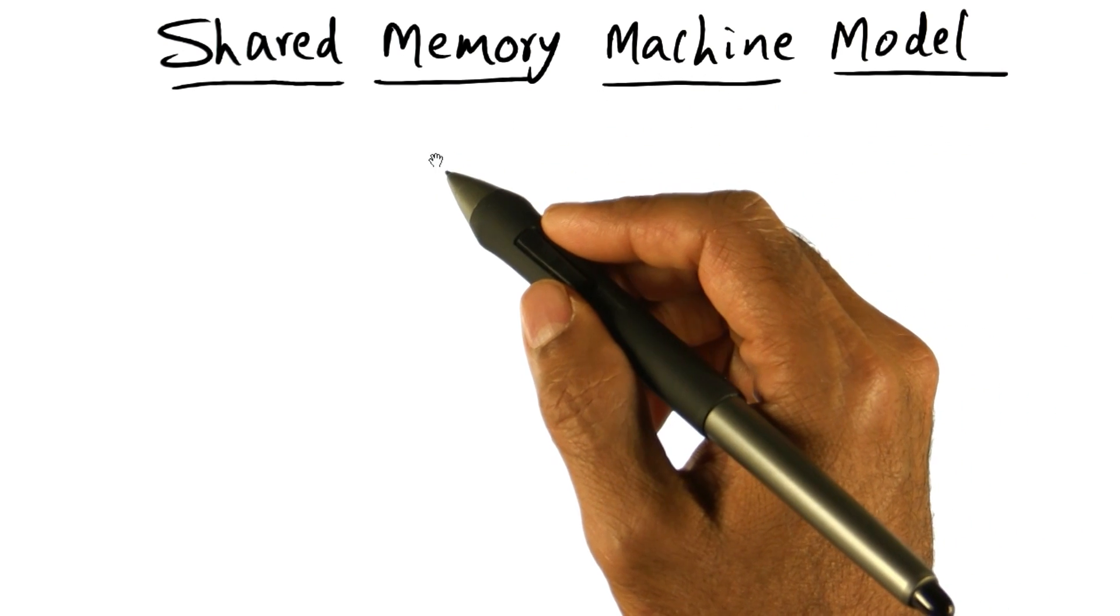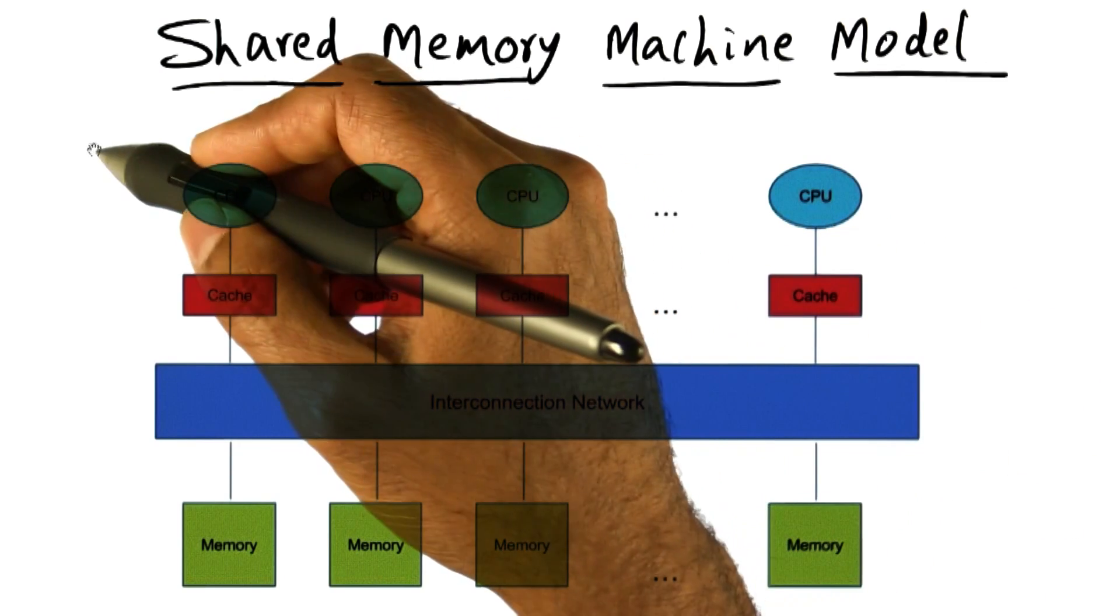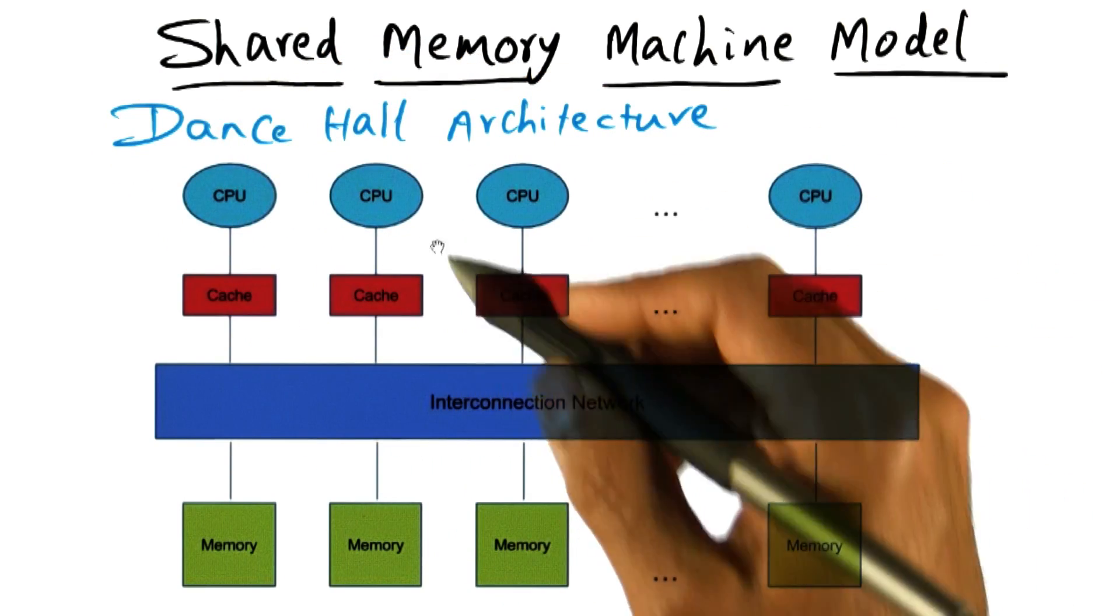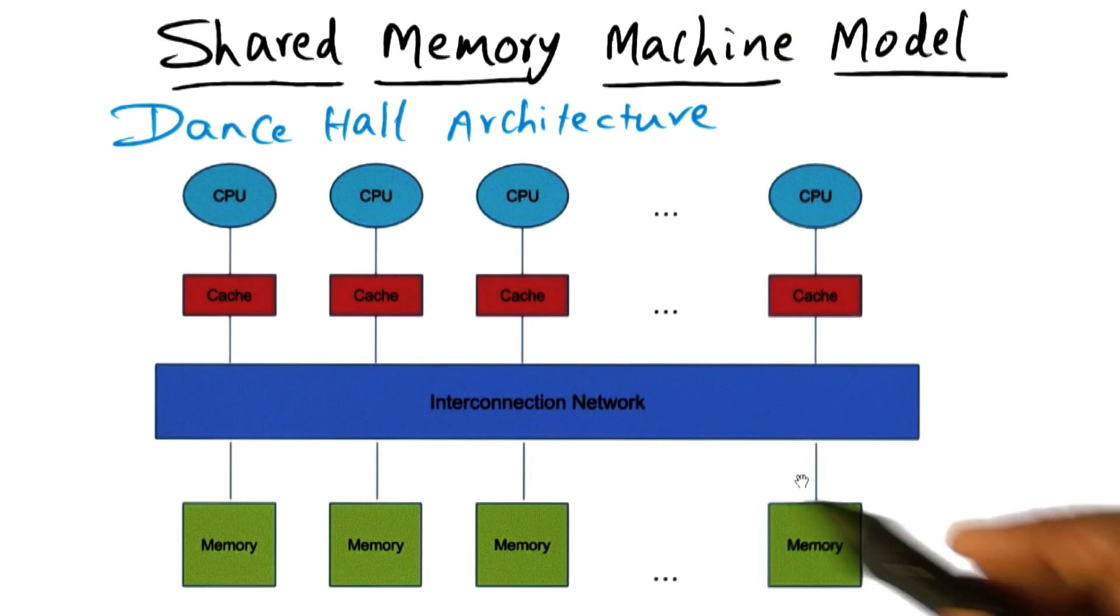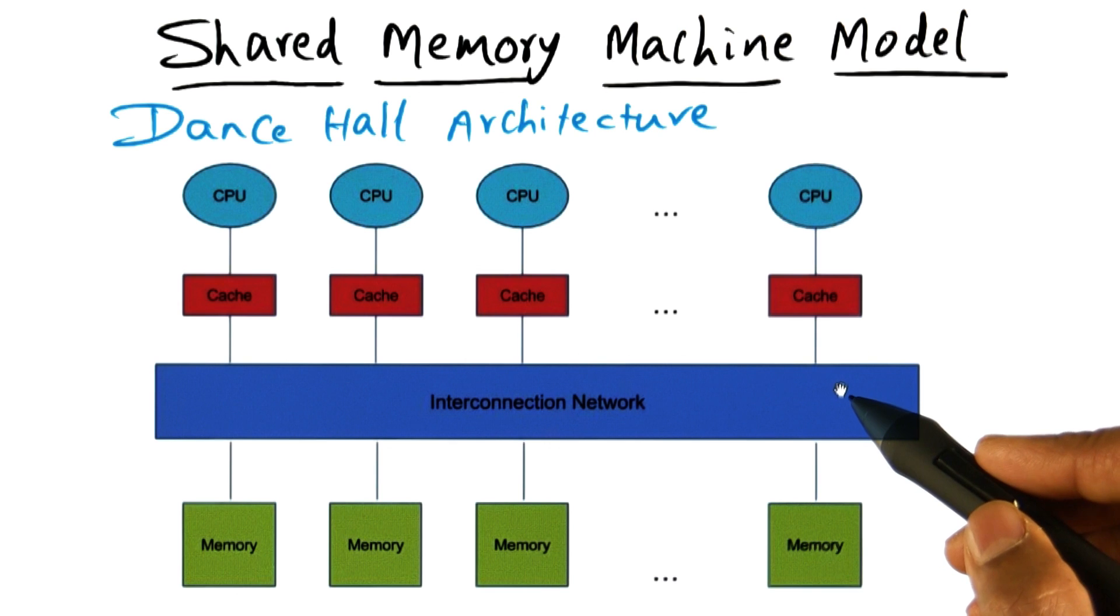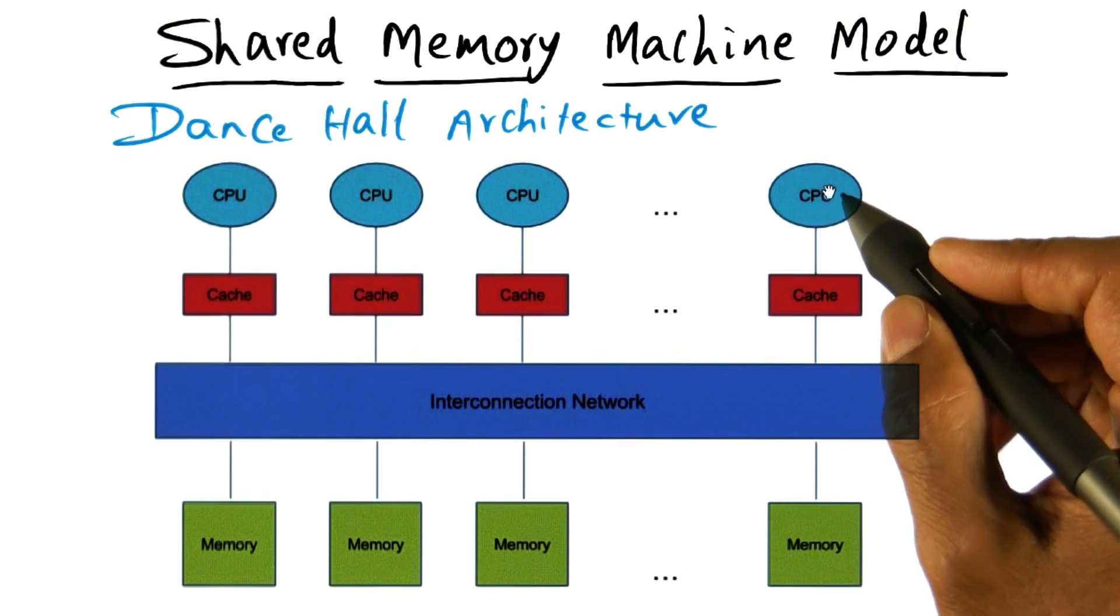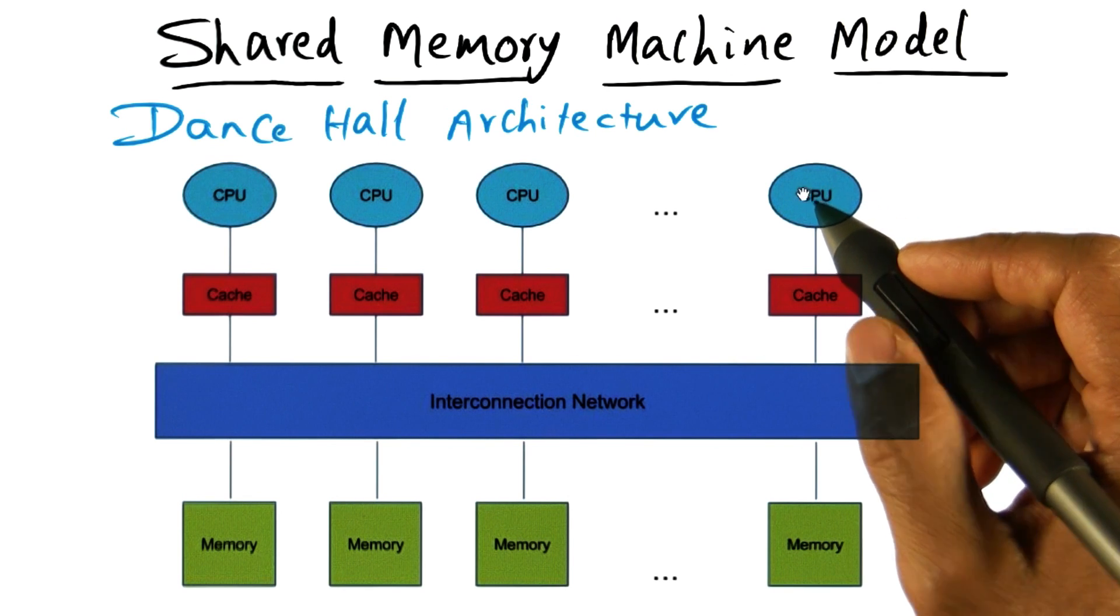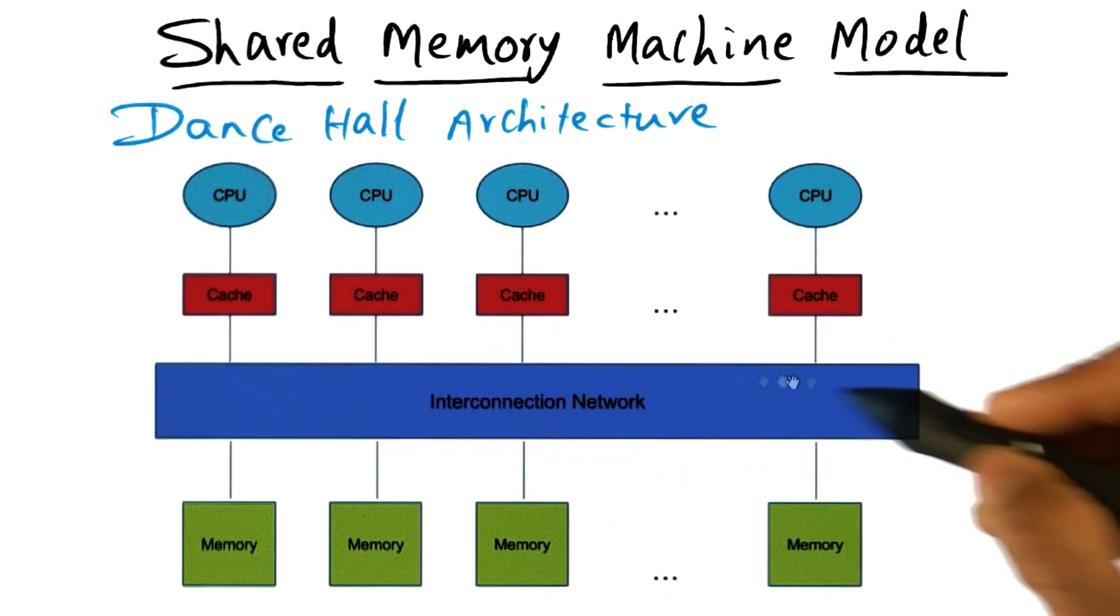The first structure is what we call a dance hall architecture. A dance hall architecture is one in which you have CPUs on one side and the memory on the other side of an interconnection network. Let me say something common to all three structures. In every one of these structures, there's going to be CPUs, memory, and an interconnection network.